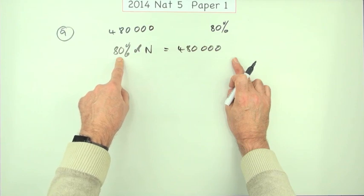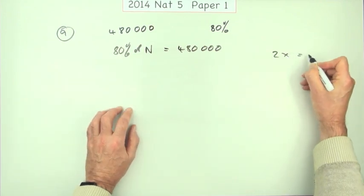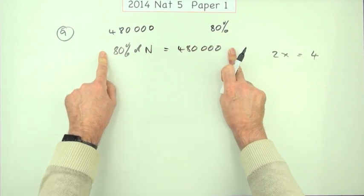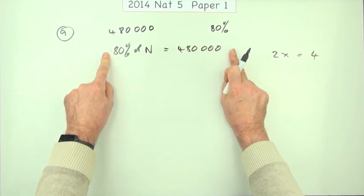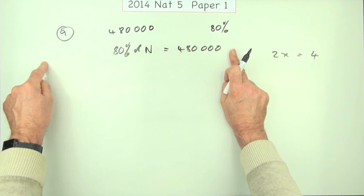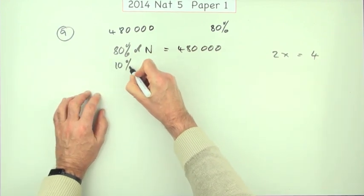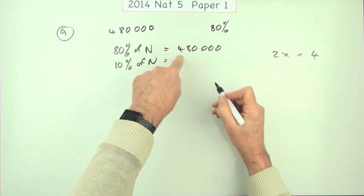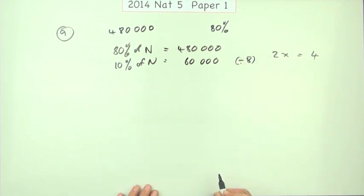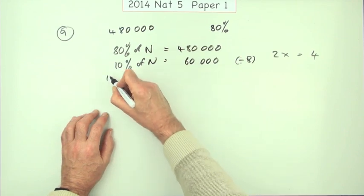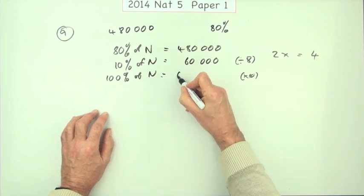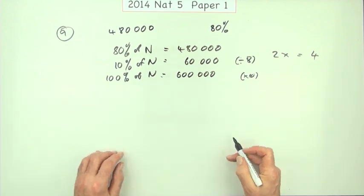The way I usually look at that is as an equation — I know how to find 80% by multiplying by 0.8. The proportion method says: 80% corresponds to 480,000. To get 10%, divide by 8, giving 60,000. Then to get 100% (all of n), multiply by 10, giving 600,000.